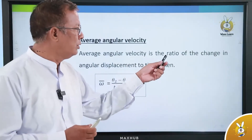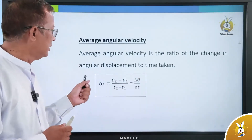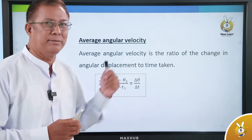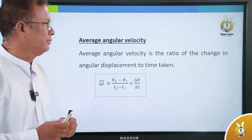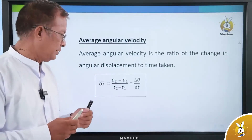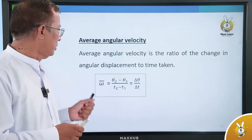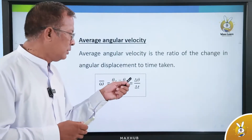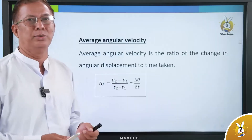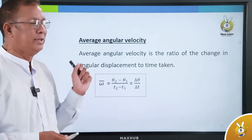The ratio is the size of the angular displacement. The angular displacement is the size of the angular displacement. Of course, every angular velocity is defined in this way.